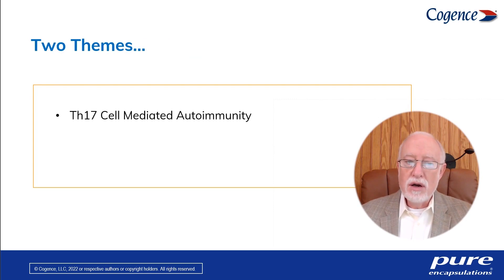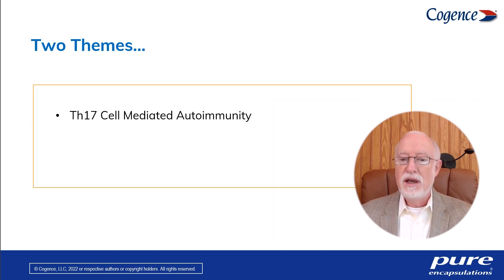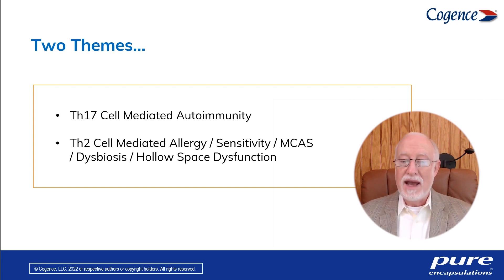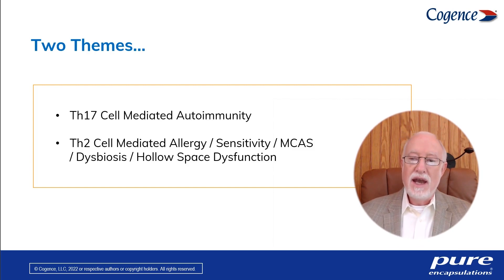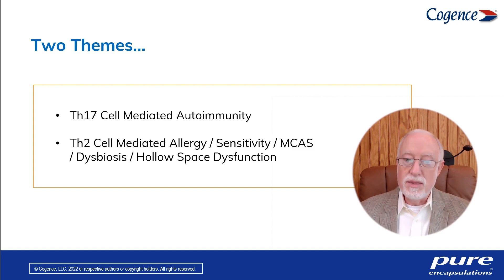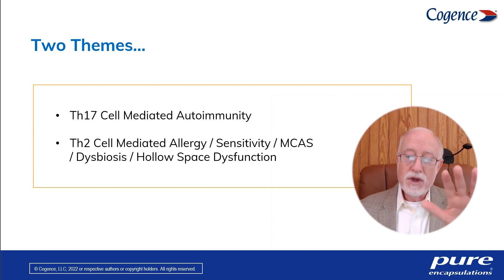Two themes are particularly worthy of our attention today. One is TH17 cell-mediated autoimmunity — the way tissue destruction is driven in the autoimmune process. We're going to be interested in genetic and epigenetic manifestations in that regard. And TH2 cell-mediated allergies, food sensitivities, mast cell activation, dysbiosis, and dysfunction of hollow spaces — all indicating a dominance of the TH2 system. Having information about the pattern in a given patient is enormously important, especially in cases with complexity.